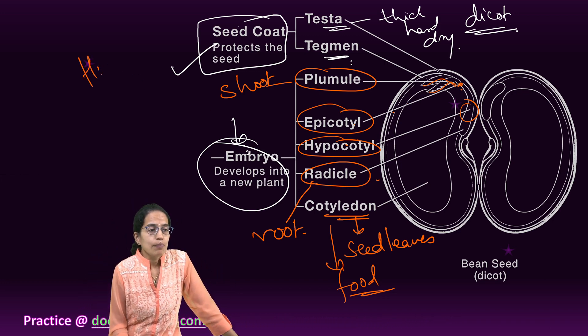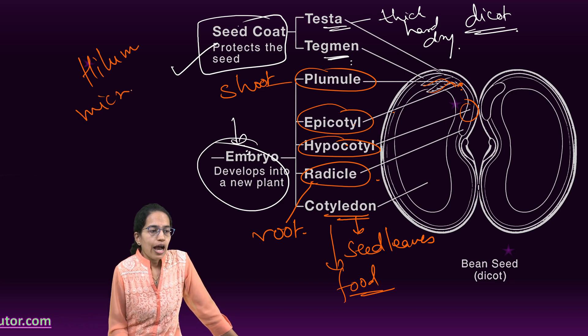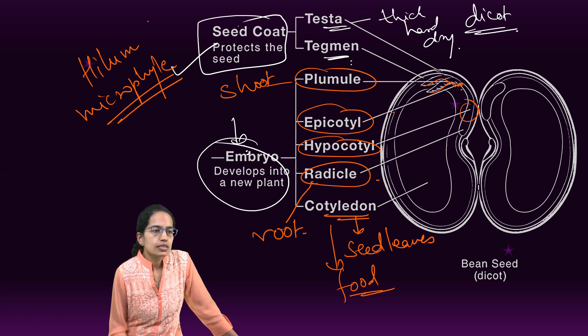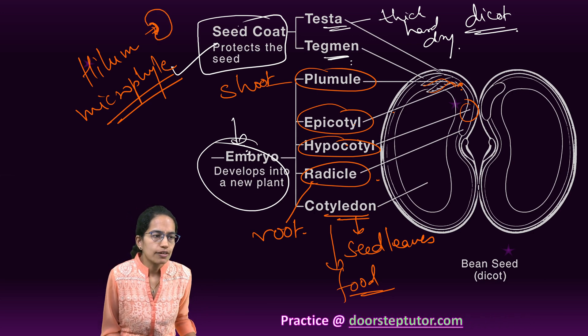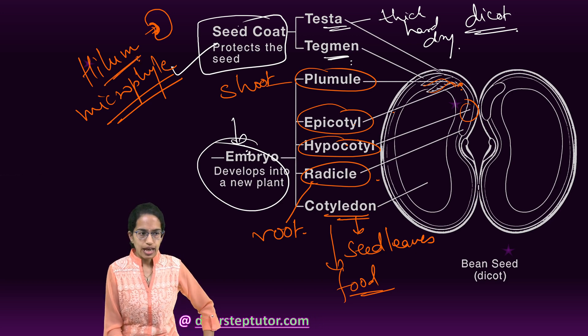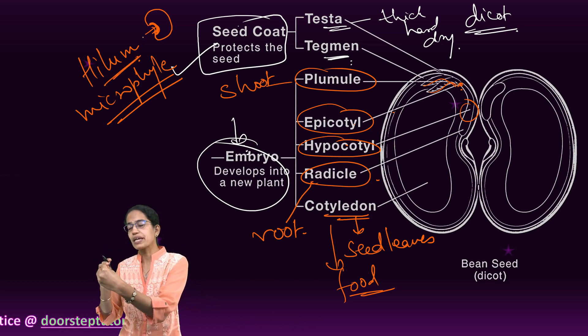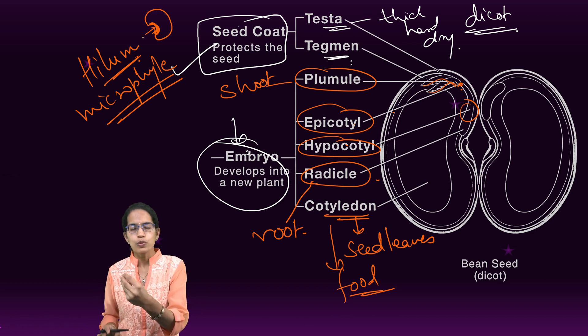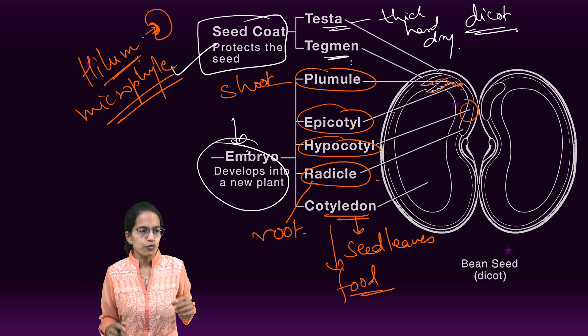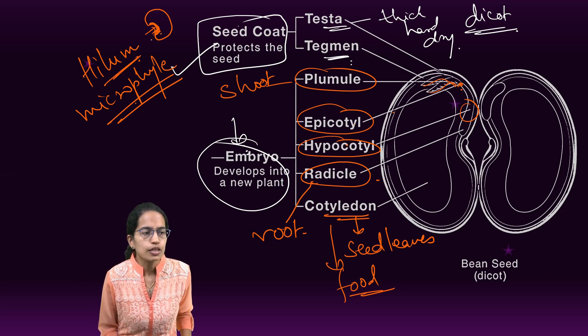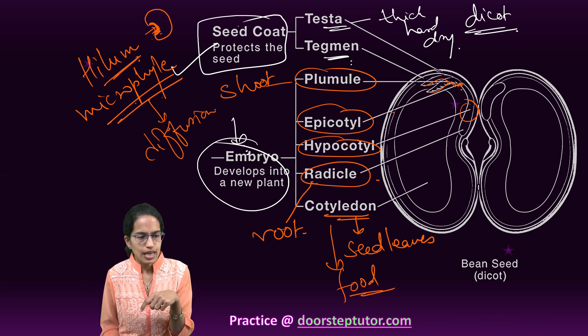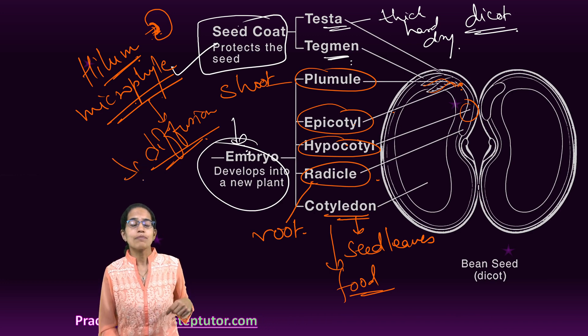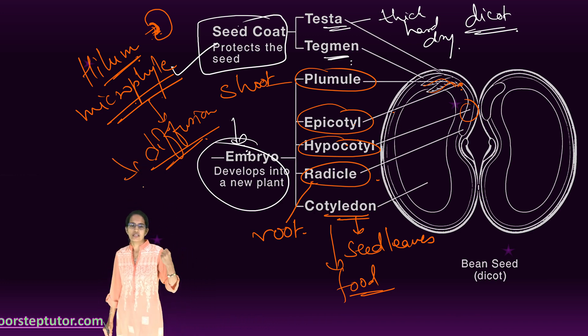One important thing, hilum and micropyle. Hilum is the concave structure or the depression of dark color on a bean if you have observed. This is the point where ovule remains attached to the placentina ovary. The micropyle is a very small opening close to the hilum and this is the point through where the diffusion of gases actually takes place. And this is another important role which is absorption of moisture in the case of germination.